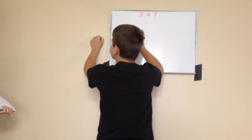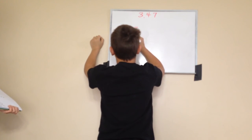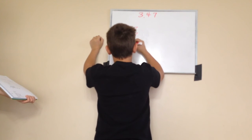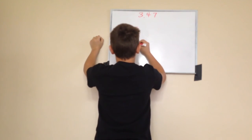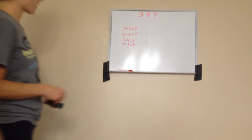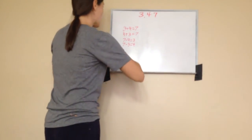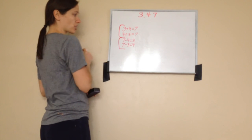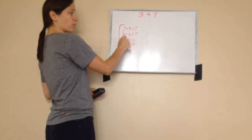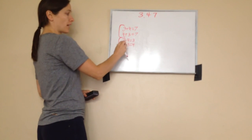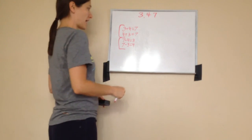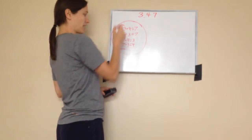Hopefully at home you're doing just the same. Eli did it exactly right. As you can see, he has two addition and two subtraction problems: three plus four equals seven, four plus three equals seven, seven minus four equals three, and seven minus three equals four. Excellent job — this is a fact family!